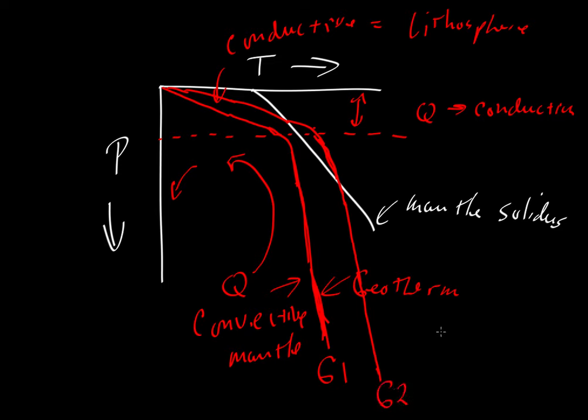But because it's hotter, bringing up hot material from the base of the mantle at the core mantle boundary, this hotter geotherm G2, so G2 generally has temperatures that are greater than G1, might be hot enough that the geotherm here would exceed the mantle solidus. And we think this is precisely what happens at places like Hawaii.